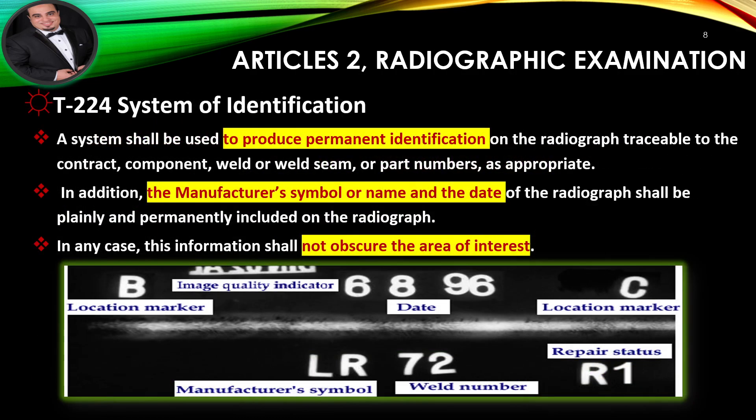System of Identification: A system shall be used to produce permanent identification on the radiograph traceable to the contract, component, weld, or weld seam, or part numbers, as appropriate. In addition, the manufacturer's symbol or name and the date of the radiograph shall be plainly and permanently included on the radiograph. In any case, this information shall not obscure the area of interest.